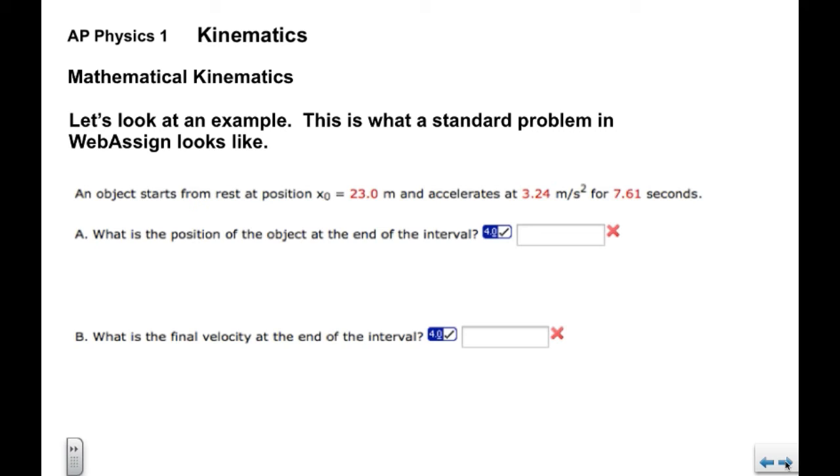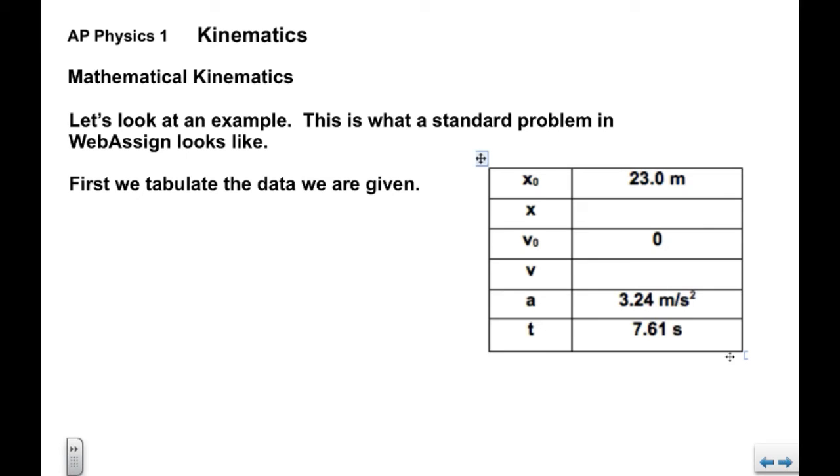Let's look at an example. This is what a standard problem in WebAssign would look like. We have an object that starts from rest at a given initial position of 23.0 meters, accelerates at 3.24 meters per second squared for 7.61 seconds. We're asked what is the position of the object at the end of the interval, what is x. And part b what is the final velocity. First we'll tabulate the data. We're told what x0 is, we're told what a is, and we're told what t is. We have to imply that v0 equals zero from the fact that the object starts from rest.